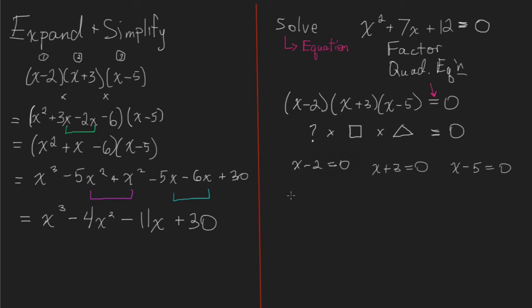And so we're going to individually solve those, which is really easy to do. We're going to add 2 to both sides. We're going to subtract 3 to both sides. And we're going to add 5 to both sides. And therefore, we have 3 solutions to this one. So you can see that there's a massive difference between expand and simplify and solve.